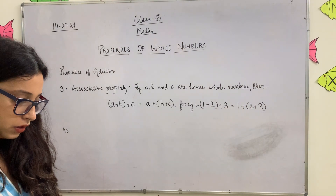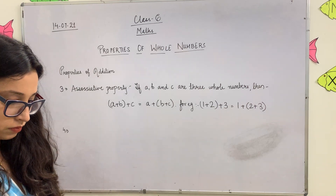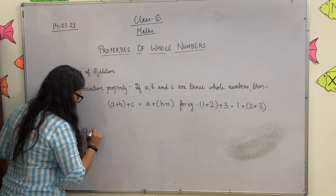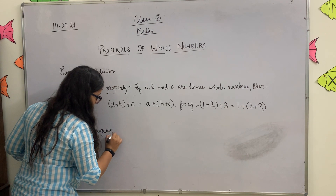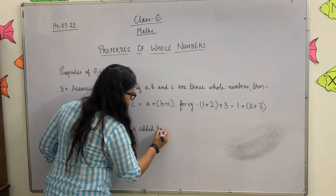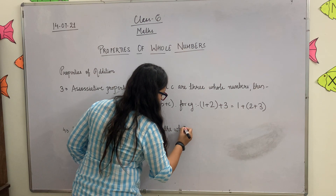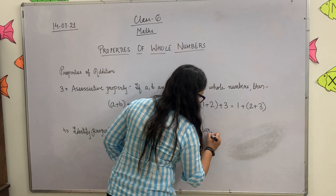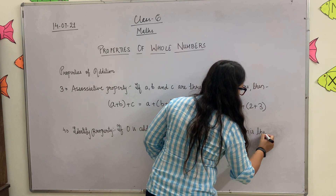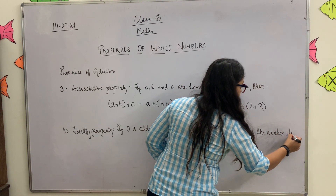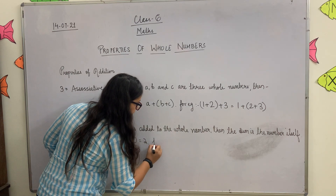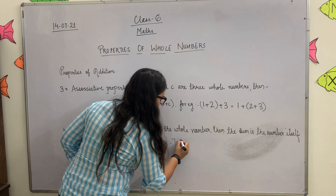Then we will come to property number 4: Identity Property. Write down: If 0 is added to any whole number, then the sum is the number itself. A plus 0 is equal to A. For example, 7 plus 0 is equal to 7.